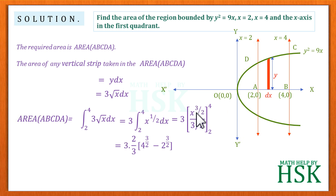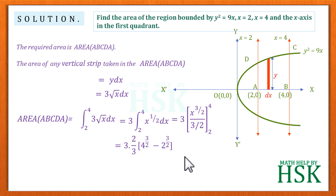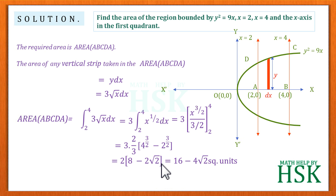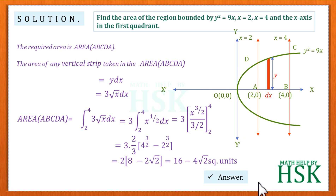Evaluating: x^(3/2) at x = 4 gives 4^(3/2) = 8, and at x = 2 gives 2^(3/2) = 2√2. So the result is 2 × (8 − 2√2), which equals 16 − 4√2 square units. This is the required answer.